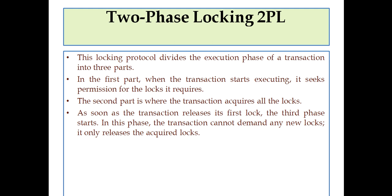Basically, two-phase locking consists of three parts: first, it seeks permissions for locks to be acquired; second, it acquires all the locks; and third, it releases the locks gradually and cannot demand any new lock at that time. That is two-phase locking.